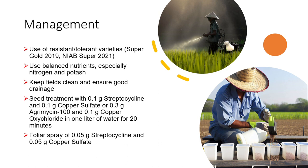Seed treatment with 0.1 gram streptocycline, 0.1 gram copper sulfate, or 0.3 gram Agrimycin 100 per kg of seed could be helpful. Similarly, 0.1 gram of copper oxychloride in 1 liter of water for 20 minutes could also be helpful for seed treatment.